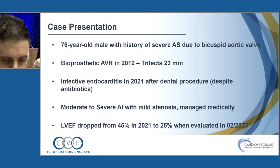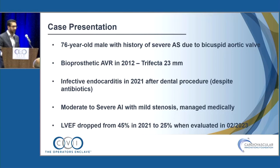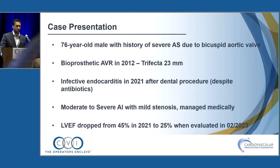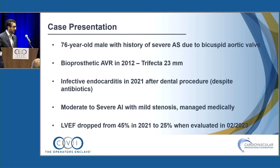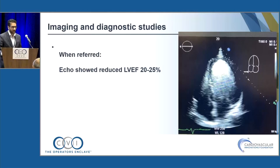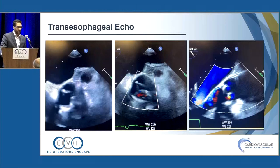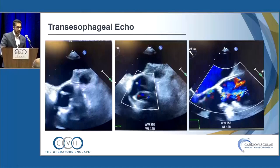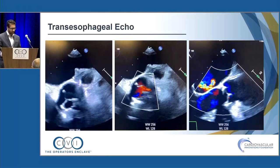The team decided to manage medically: EF was 45%, he recovered, so they left it alone. This illustrates an important point — we tend to ignore AI more than AS. When referred in February 2023, his EF was 25%. Classic dilated LV with significant AI on TEE — leaflets not co-opting well, with an eccentric jet that was likely the culprit.